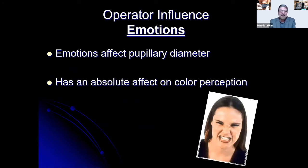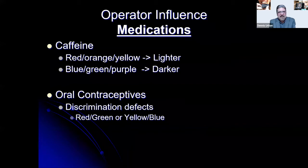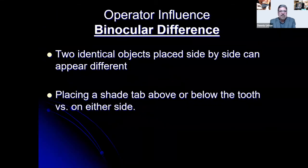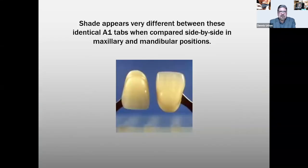Emotions affect pupillary diameter and have an absolute effect on color perception — so be in a good mood when taking a shade. Medications including caffeine and oral contraceptives can cause different color variations in the eye. Binocular influence: when two identical objects are placed side by side they can appear different. Placing a shade tab above or below the tooth — or comparing maxillary and mandibular positions — can make identical A1 shade tabs appear very different. Make sure the shade tab is in the correct position when taking the shade.